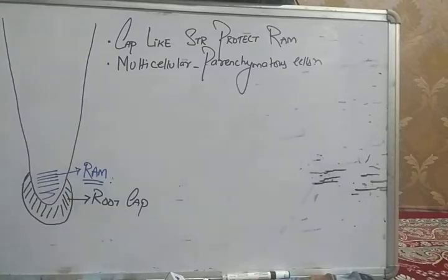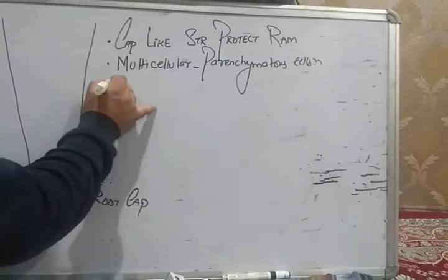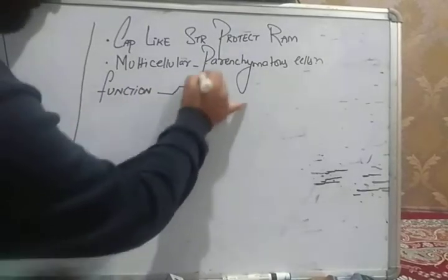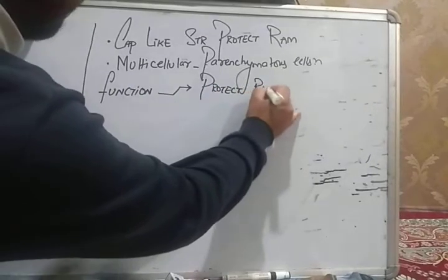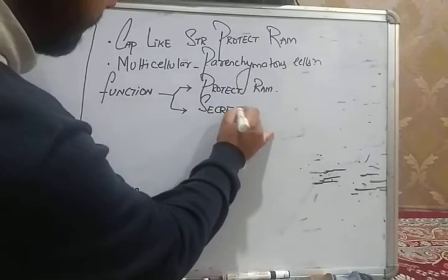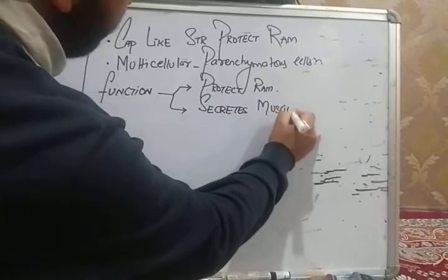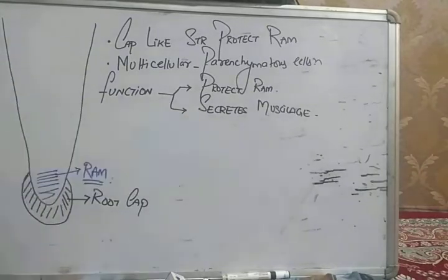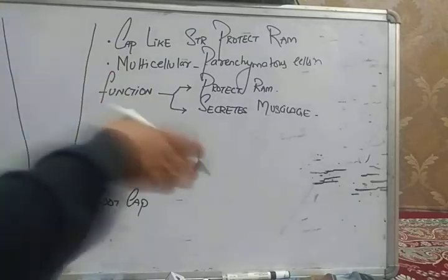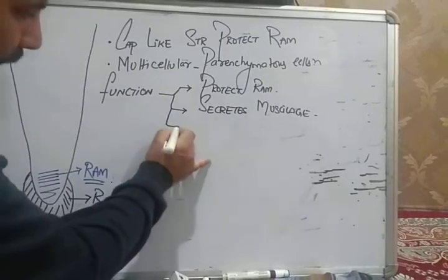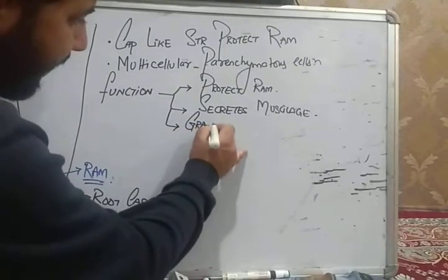Now as far as this root cap is concerned, its function - the first function is it protects root apical meristem. The second important function is that this root cap secretes mucilage. Root cap kya karta hai, yeh secret karta hai mucilage. Mucilage secretion ki wajah se penetration into the soil becomes easy. This is the second important function of root cap.